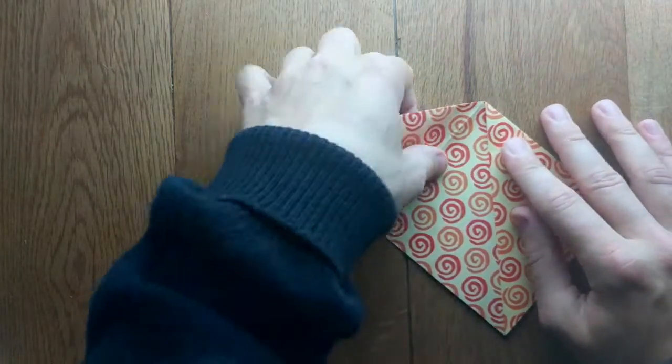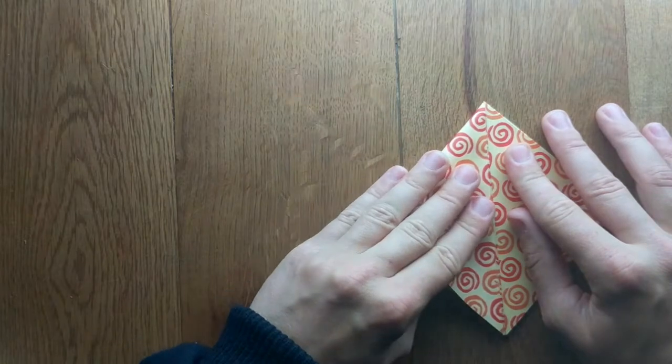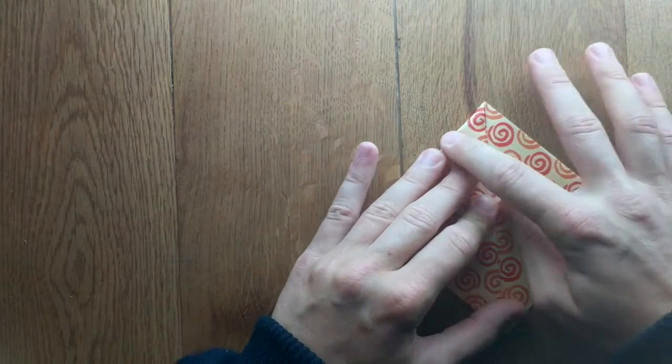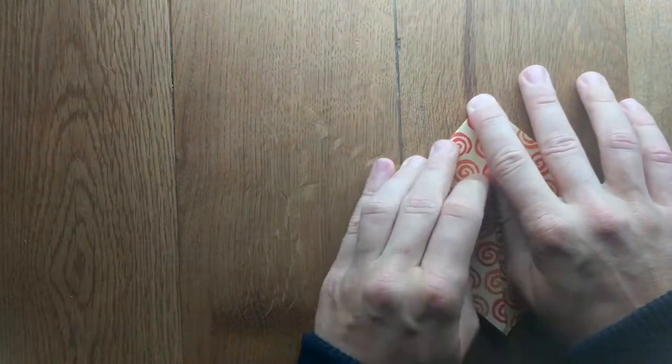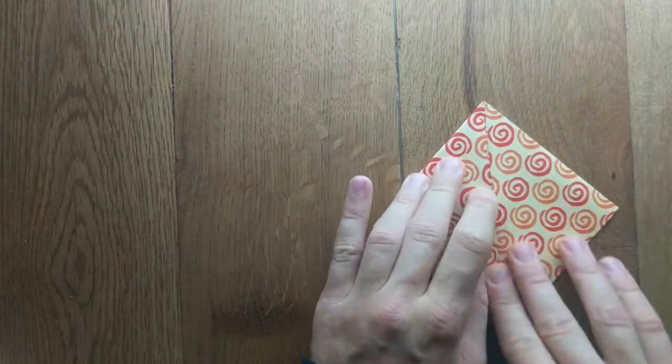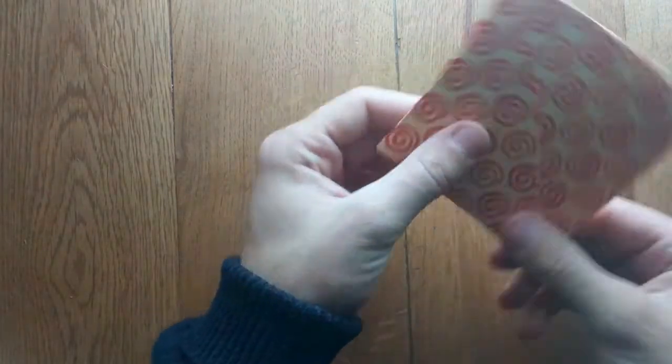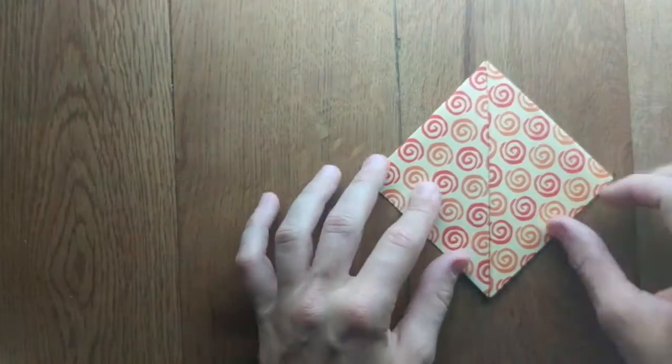So you do that side and then that side. You should have almost a smaller square like that, and you want to put that in a diamond shape.